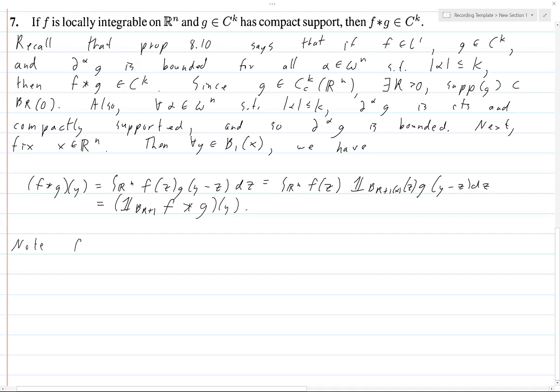Now note that f is in L^1_loc, which implies that f times 1_{B_{R+1}(x)}, there should be an x there. This must be in L^1, because locally integrable technically means that it needs to be supported on a compact set. So let's just make it closed, just to be safe, just so that it's compact. But anyways, so this is in L^1, and so by Proposition 8.10, we have f times 1_{closure of B_{R+1}(x)} convoluted with g is in C^K.